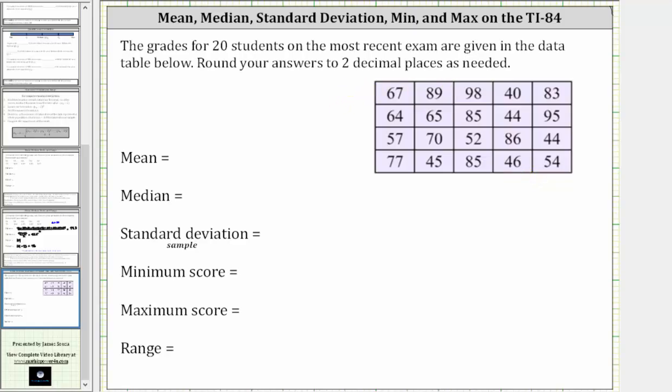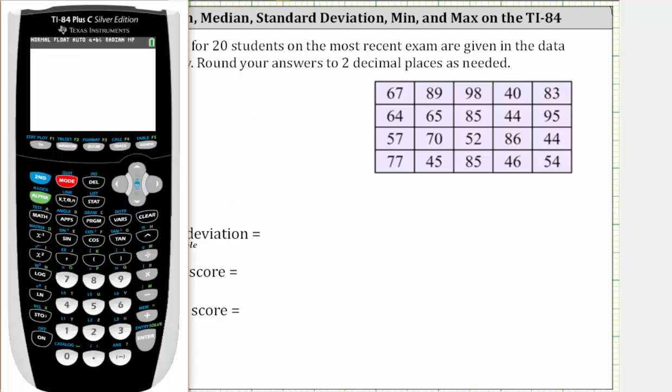The first step is to enter the data into the calculator. From the home screen, we press STAT and then ENTER. Let's enter the data in L1. Notice how I have some old data in L1, so we go to the top of L1, press CLEAR, and then ENTER. And now we enter the data values.